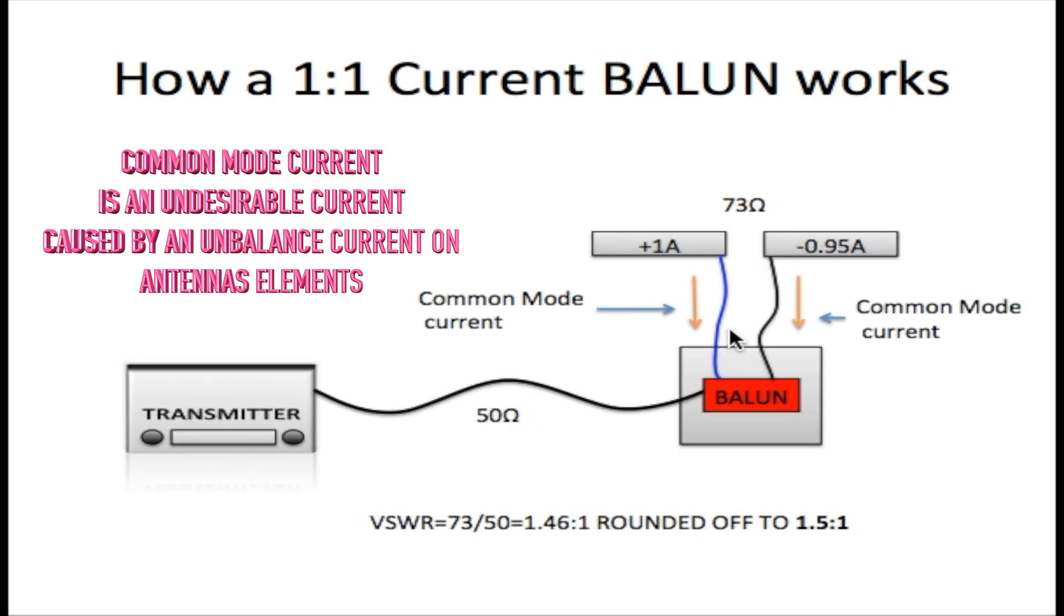Now in the real world, this is how it works. Even though we have a Balun, we may have plus 1 amp on one element, but the other one we might have minus 0.95 which is almost 1 amp, but it is not exactly 1 amp. So we will have some common mode current. Most of the time on every antenna system, you are going to have common mode current coming back.